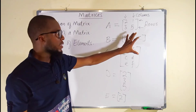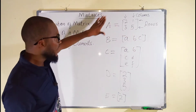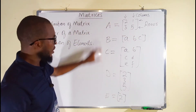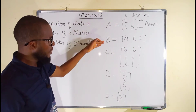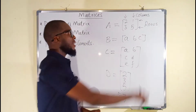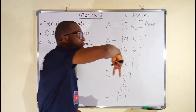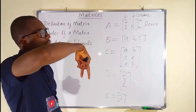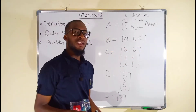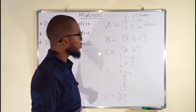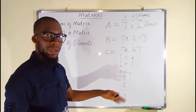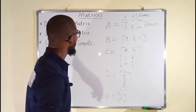So this is how a matrix is represented under a bracket. Those elements under the bracket are said to be the elements of the matrix. The vertical arrangement are said to be the columns while the horizontal arrangement are said to be the rows. This is all about definition and representation of a matrix.